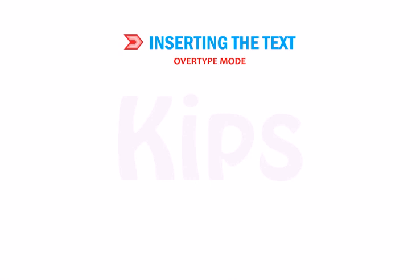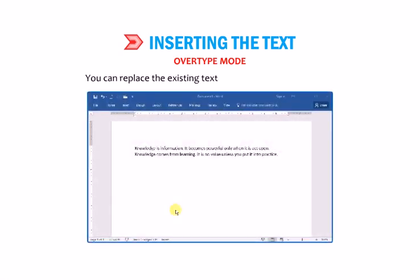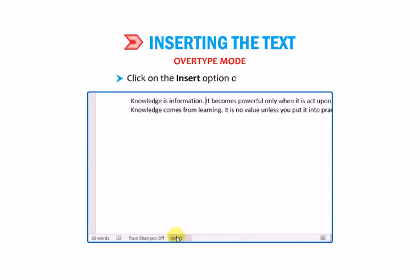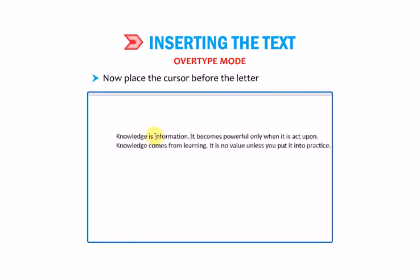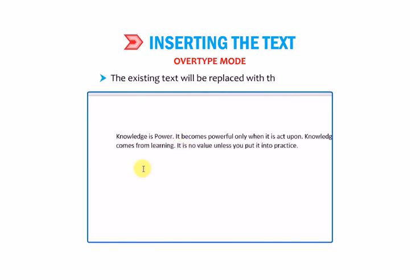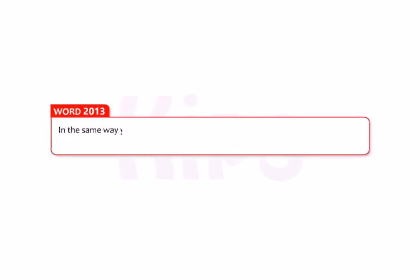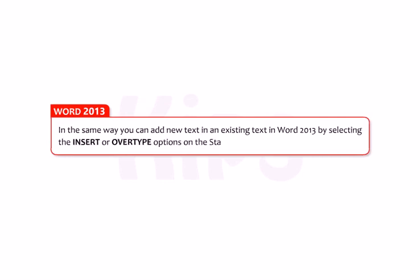Now let's talk about Overtype Mode. You can replace the existing text by typing new text on it. To enable Overtype Mode, click on the Insert option on the status bar — it will change the existing mode into Overtype Mode. Place the cursor before the letter and start typing. The existing text will be replaced with the new one. In the same way you can add new text in Word 2013 by selecting the Insert or Overtype options on the status bar.